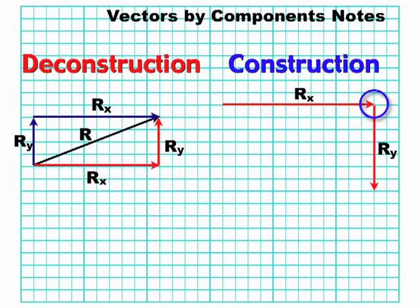So they're added up, that means they're components of a bigger vector. And the bigger vector starts at the very beginning of the tail, which is the left of rx, and then goes to the tip of ry. And that's my resultant.